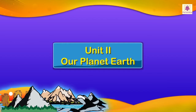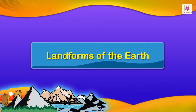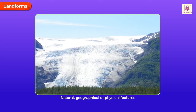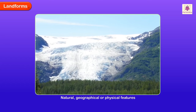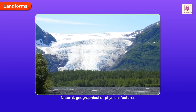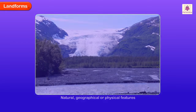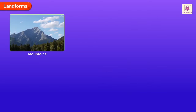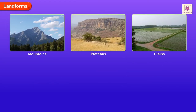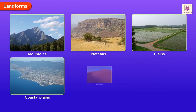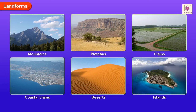Unit 2: Our Planet Earth. Landforms of the Earth. Landforms are natural, geographical or physical features on the Earth's surface. Collectively, these include mountains, plateaus, plains, coastal plains, deserts and islands. Let us learn about these landforms.